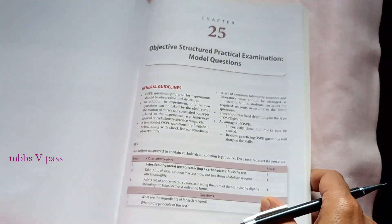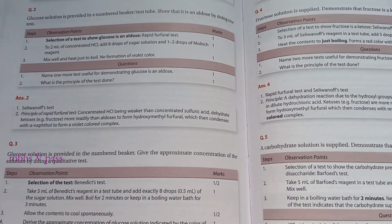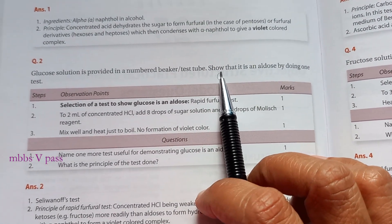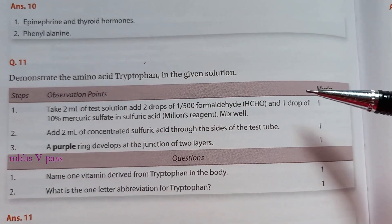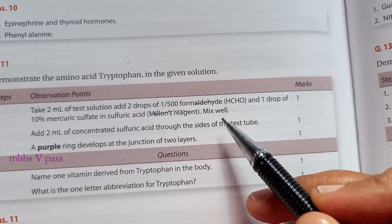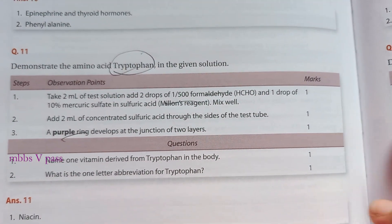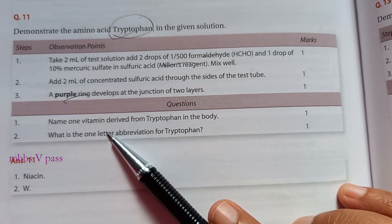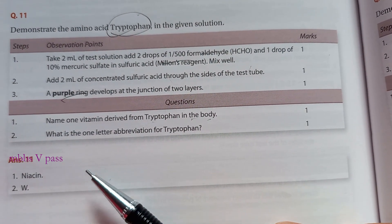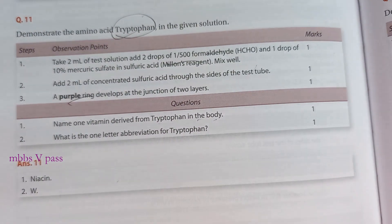Here is a question-and-answer section. Tryptophan — you have to demonstrate its presence. So what will you do? Millon's reagent and formaldehyde. You do all this and you get a purple ring, which indicates tryptophan. They've also given answers to these questions. Name one vitamin derived from tryptophan in the body. What is the one-letter abbreviation of tryptophan? W. Where is W in tryptophan? W represents tryptophan. Kind of nice to know all this, isn't it?